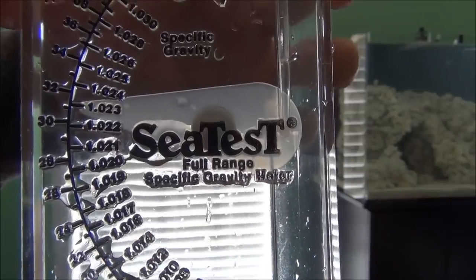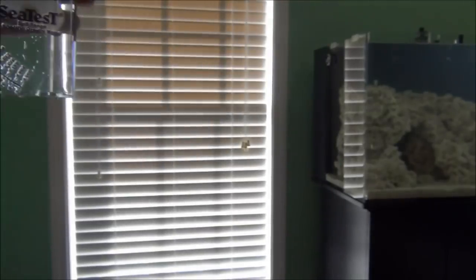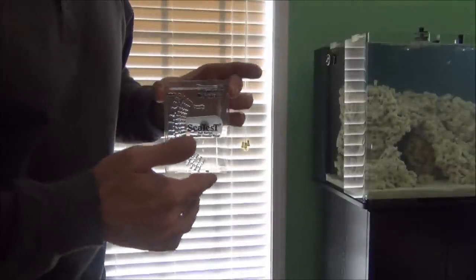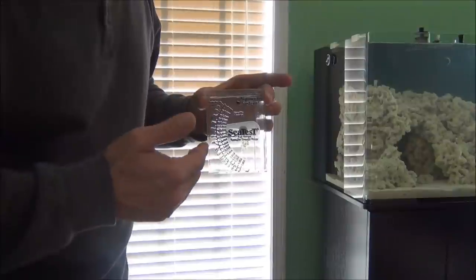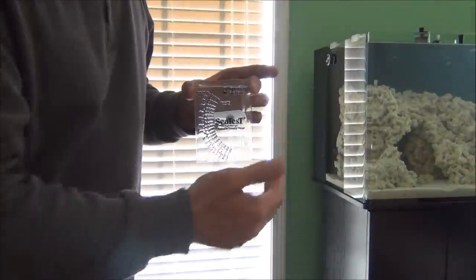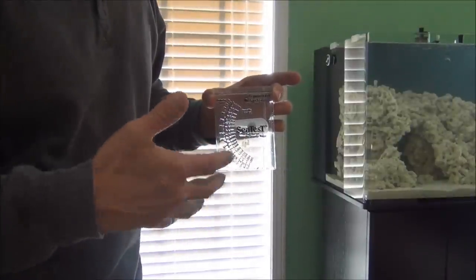So, we're really, really low. This is a lot lower than what the refractometer shows us. And that's because of the temperature difference. Like I said, this was calibrated, I believe, at 60 degrees Fahrenheit. Being that this water is warmer, it's not as dense.